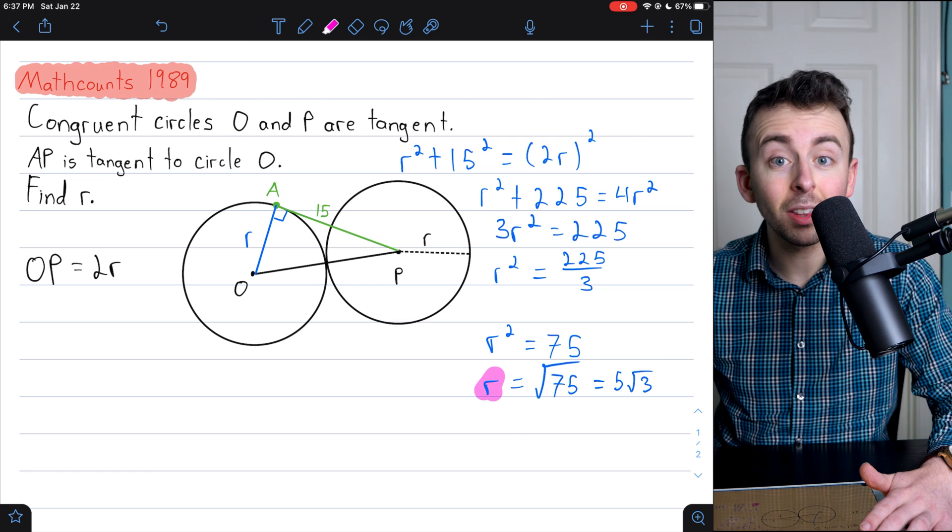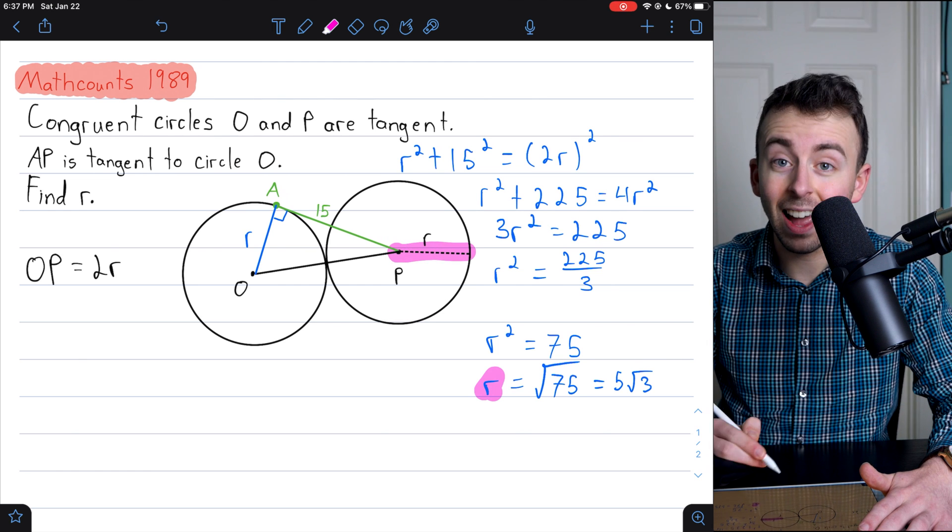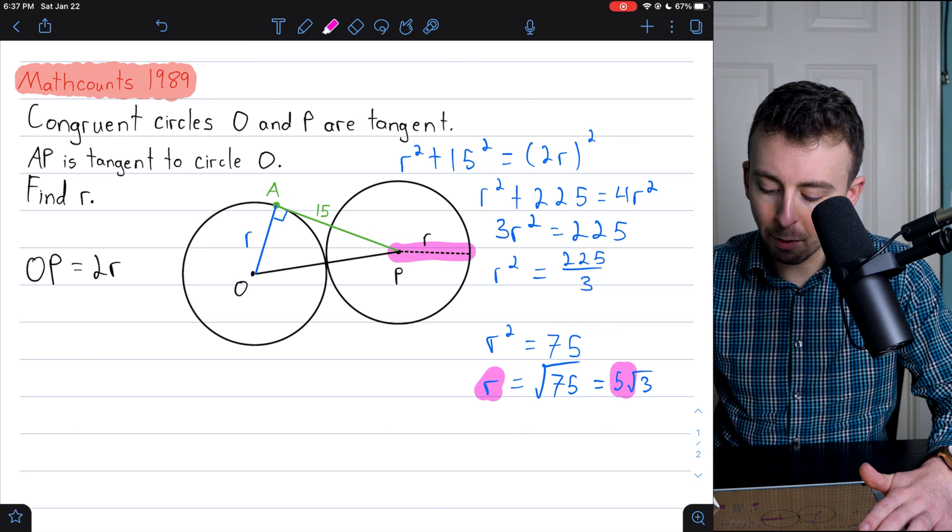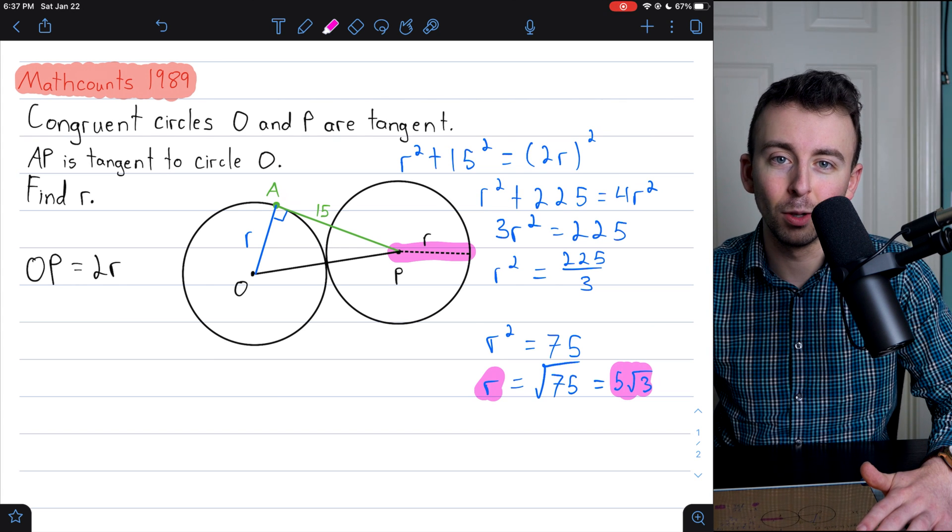So the radius R that we're trying to solve for, this guy here, has a length of 5 root 3. That's the first solution.